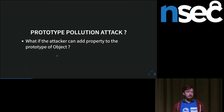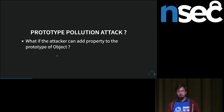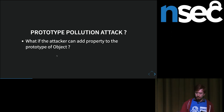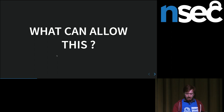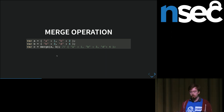But this presentation is not about developers shooting themselves in the foot by adding extension methods on Object. This is mostly about what if an attacker can actually start doing those things — can actually start adding properties on the prototype of Object. So the first thing we need to ask is: what can even allow an attacker to add properties on the prototype of Object?